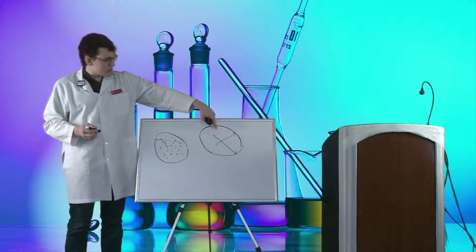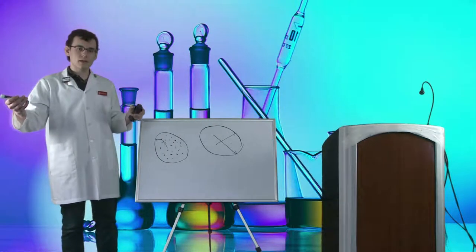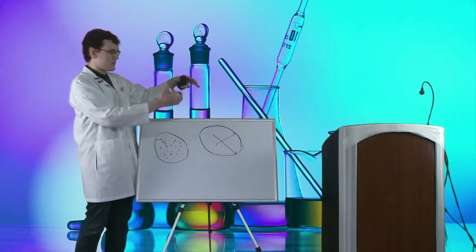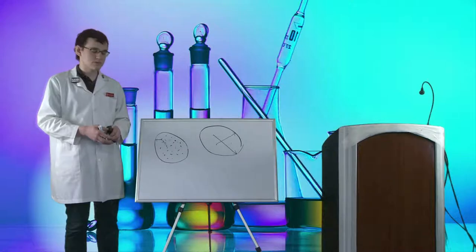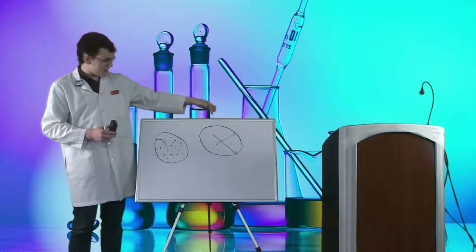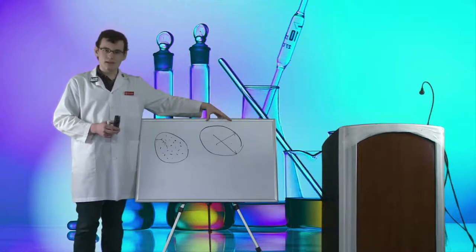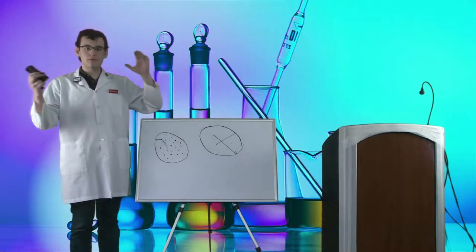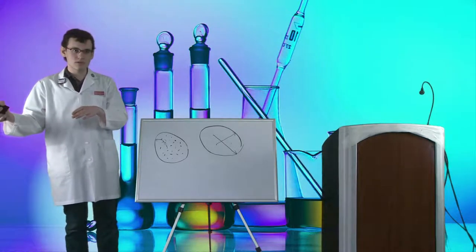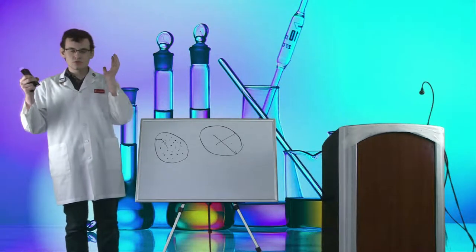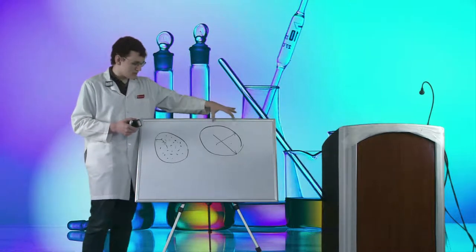We can't model this type of vacuum as a fluid like we can normal air. It's a molecular environment, and we model it as a bunch of individual particles. The fact that we have to transition from fluid flow to molecular flow is the basis of how all the vacuum pumps work, how all the conflat seals work, and why we have to have things so tightly sealed with so little dust. It's all because of this molecular flow.